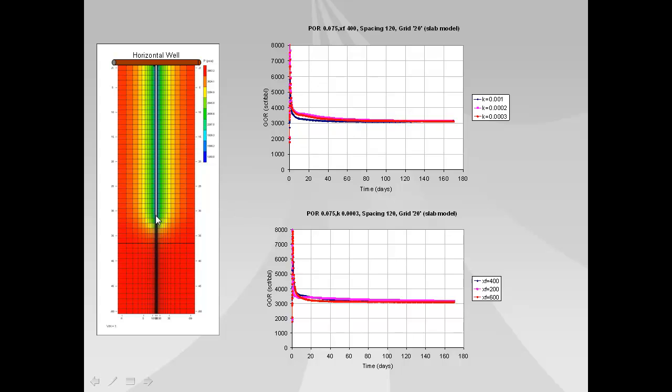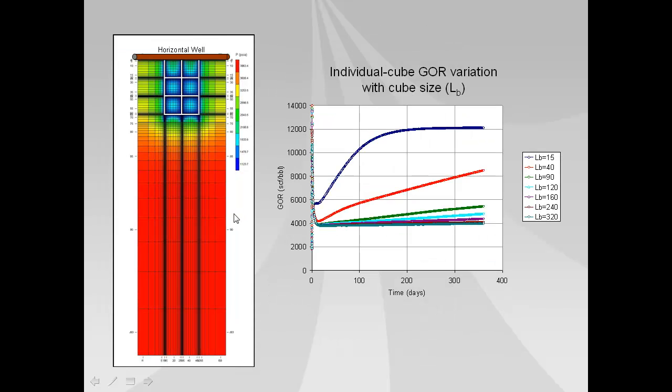If instead of a planar slab fracture we have a network of fractures that have been created by the hydraulic fracture for example as shown here we have a fracture that's more like a network. And what you see is that the gas oil ratio time behavior for a single cube within that fracture network has a much different and non-constant increasing GOR with time.